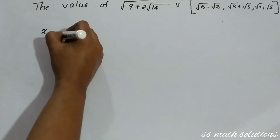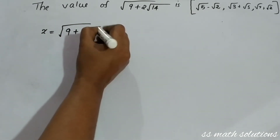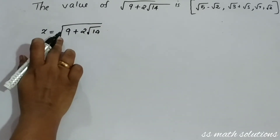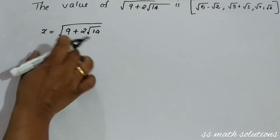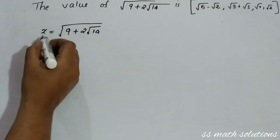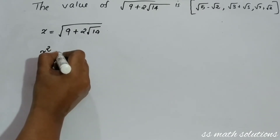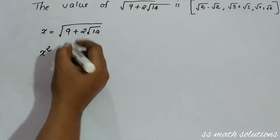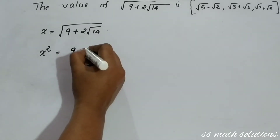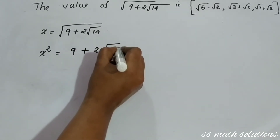So x is equal to √(9 + 2√14). We need to remove this square root, so we are squaring both sides. After squaring, the root will go, so x² is equal to 9 + 2√14.